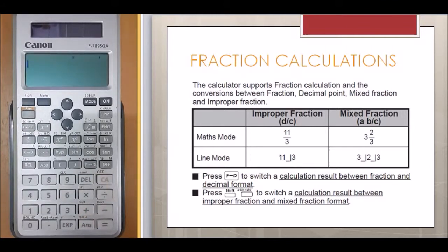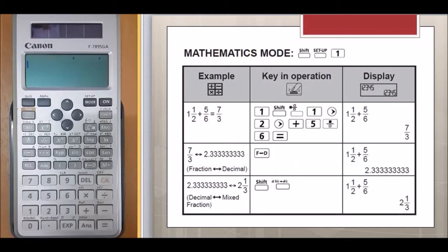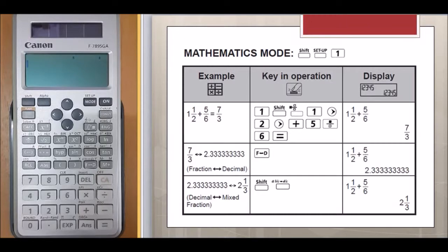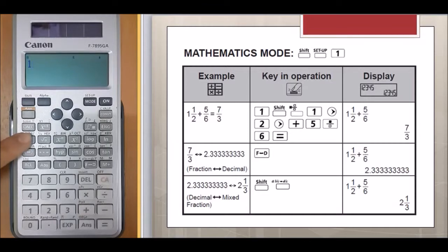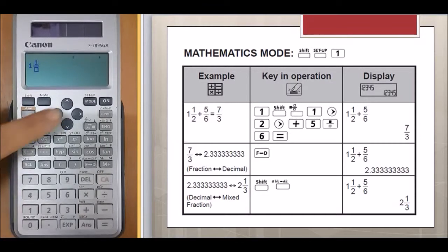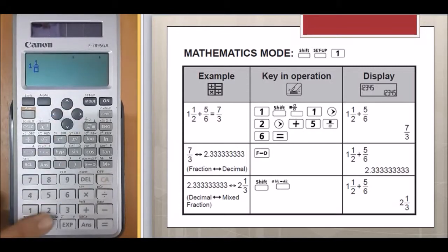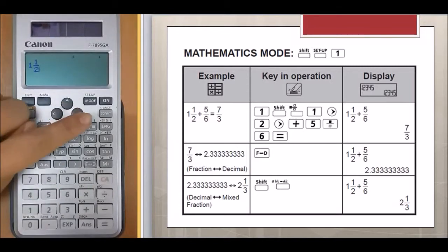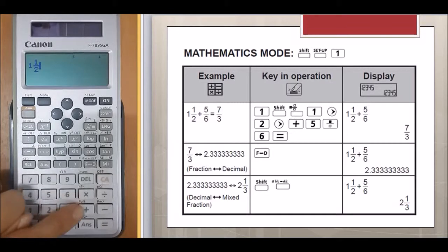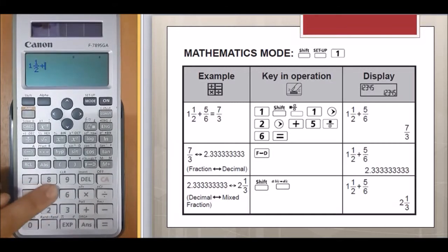Let's see example 1: 1.5 plus 5 over 6. Press 1, shift, mixed fraction mode, 1, right, 2, right, plus 5, fraction 6.